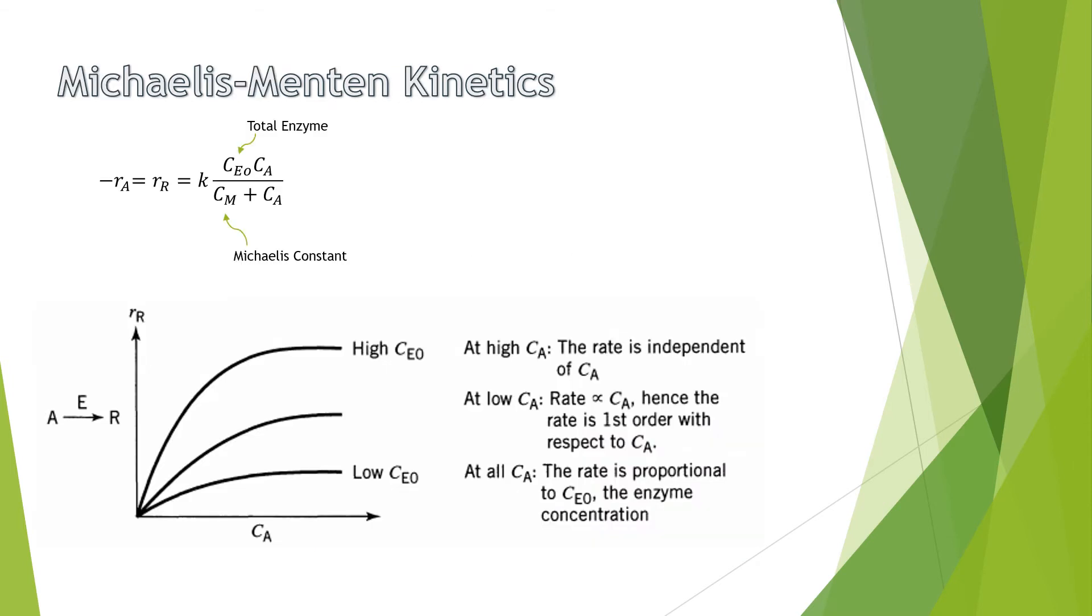With a clear understanding of enzyme fermentation, I will now discuss a method called Michaelis-Menten Kinetics, which is practically a quantitative aspect of observing enzyme fermentation. The MM Kinetics method states that the rate of the reaction would be equal to the total enzyme multiplied by the concentration of A over the Michaelis concentration plus the concentration of A times K.